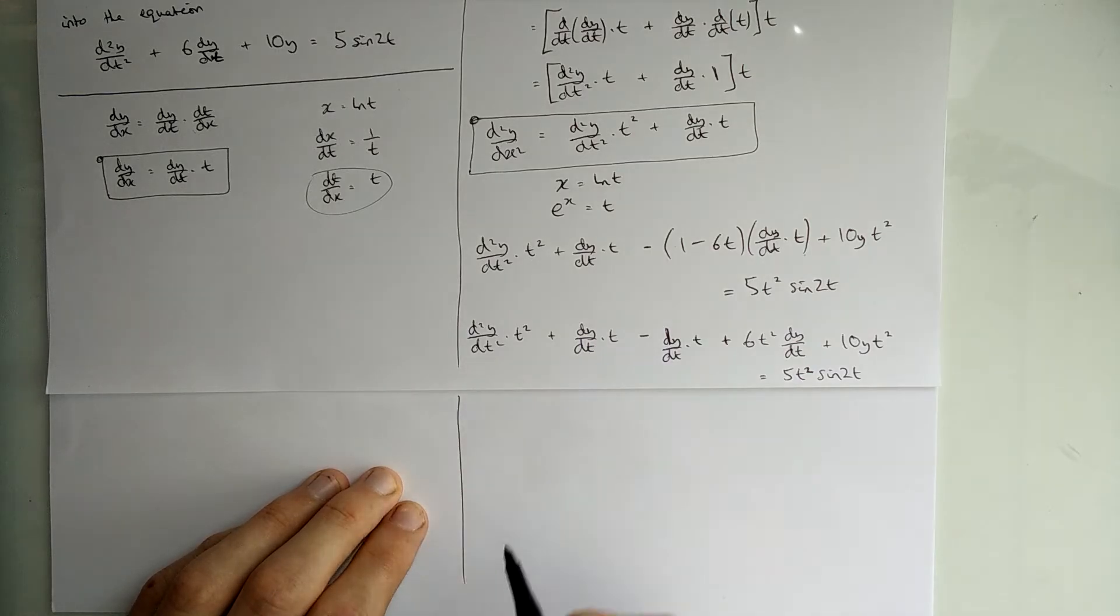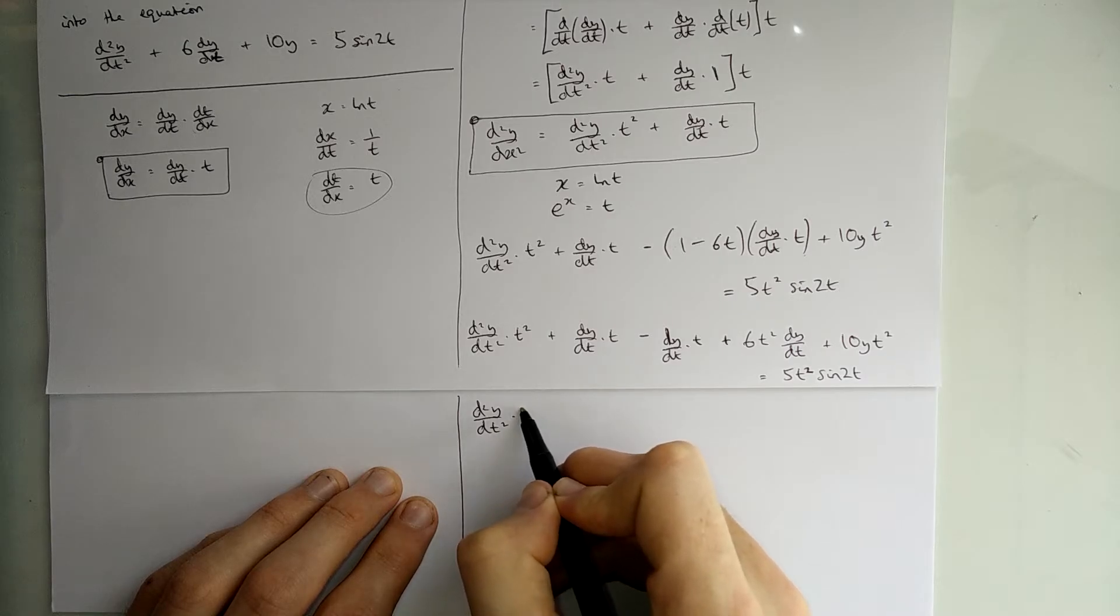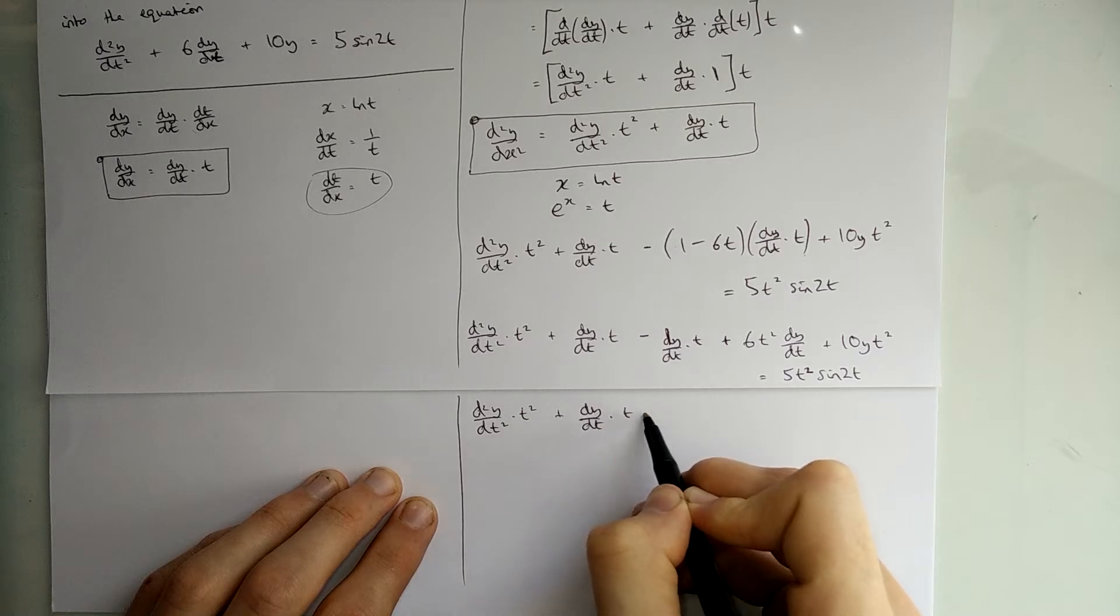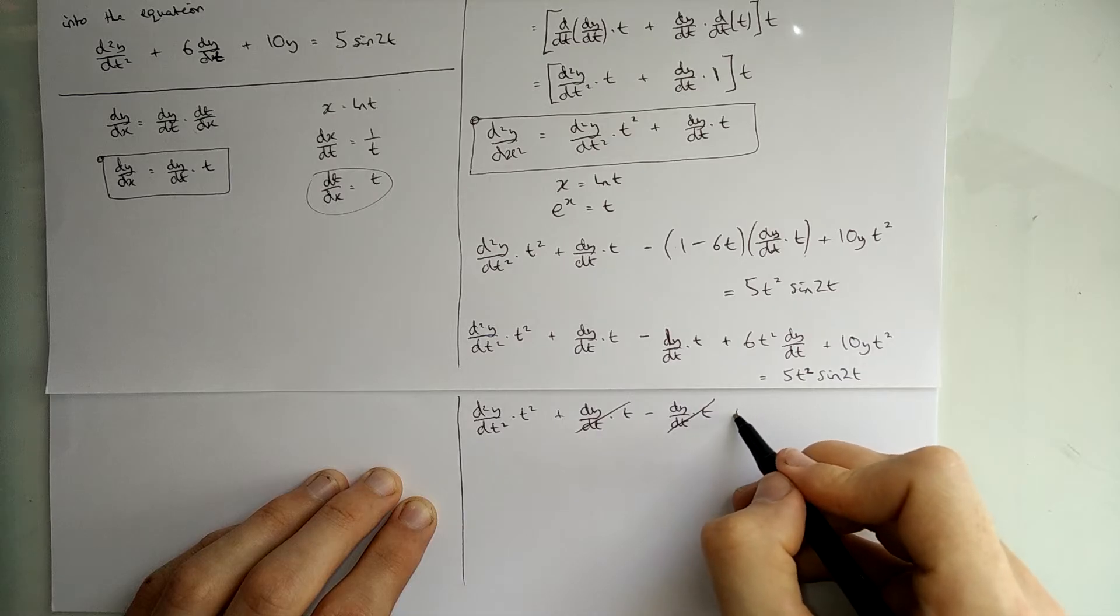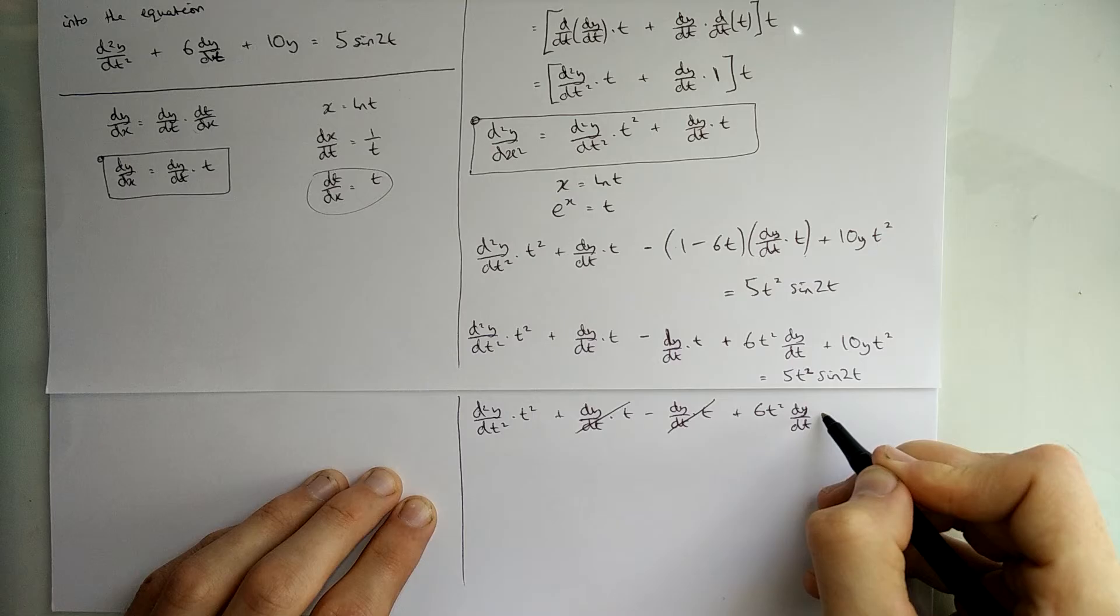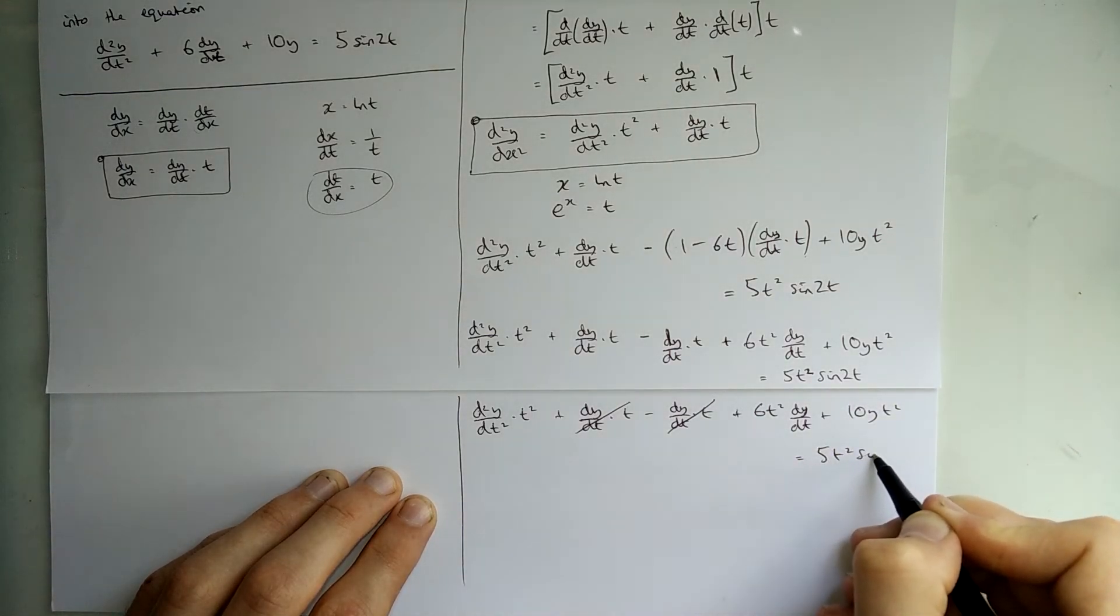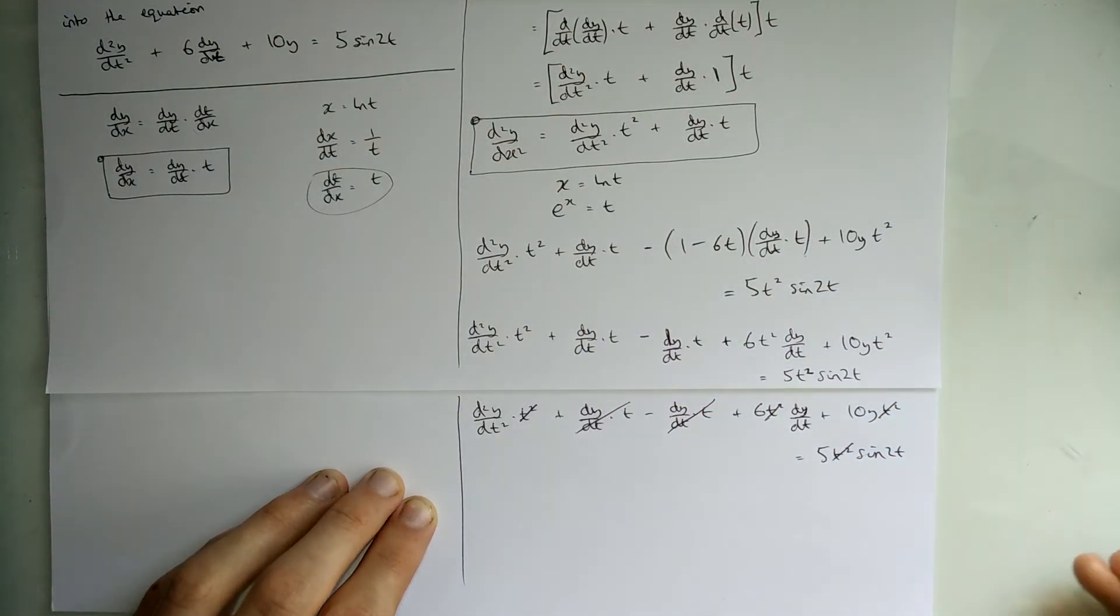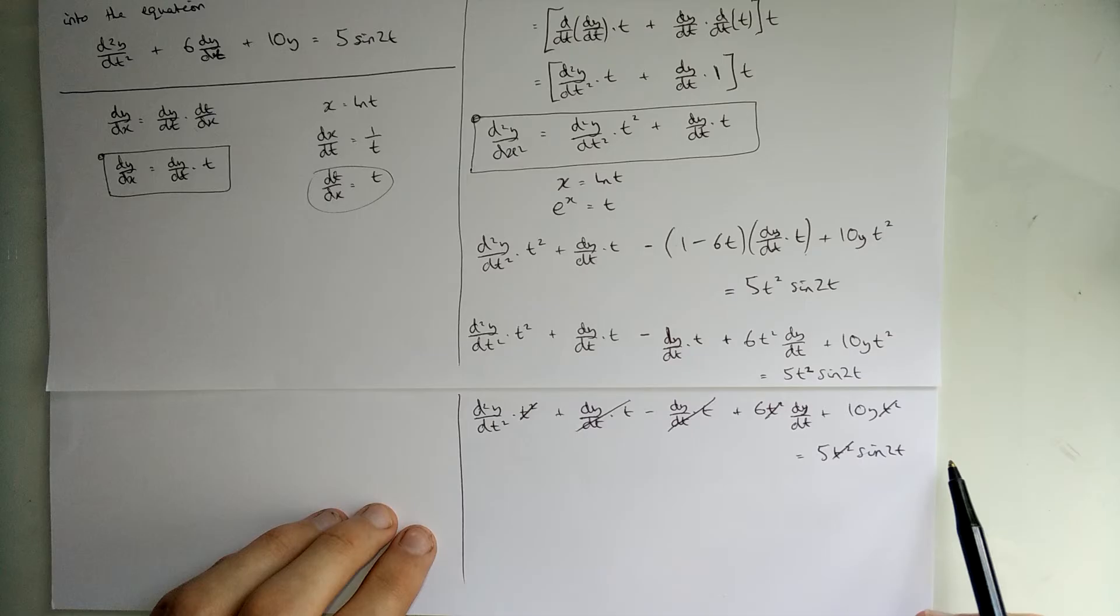Keep going. So, d²y/dt² times t² plus dy/dt t or minus dy/dt t. So, that and that cancel out, don't they? Plus 6t² dy/dt plus 10y t² is equal to 5t² sine 2t. And that means that t²s all cancel out as well. I'll rewrite that line because it helps for the video. You can see this line and this line crossing out.